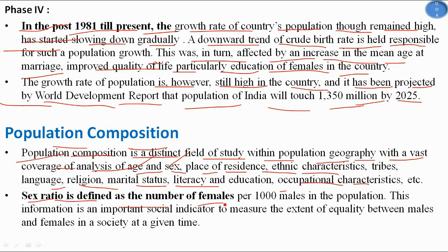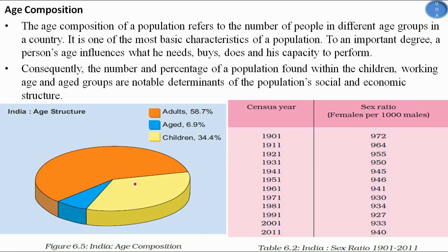Sex ratio is defined as the number of females per 1,000 males in the population. It is an important social indicator to measure the extent of equality between males and females in a society. The data shows 972 females per 1,000 males in 1901, compared to 940 females per 1,000 males in 2011.